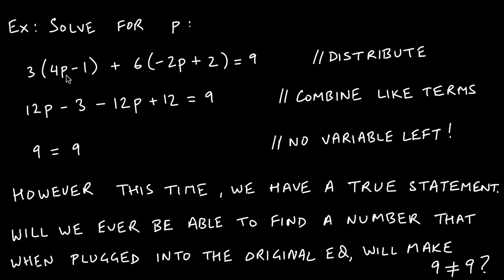Let's look at an example that produces infinitely many solutions. We have a linear equation in p: 3(4p − 1) + 6(−2p + 2) = 9. We have parentheses, so the first step is to distribute. 3 times 4p gives 12p, 3 times −1 gives −3, 6 times −2p gives −12p, and 6 times 2 gives 12. The 9 comes along on the right.